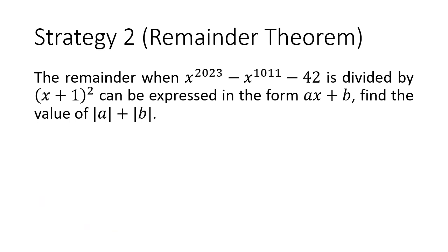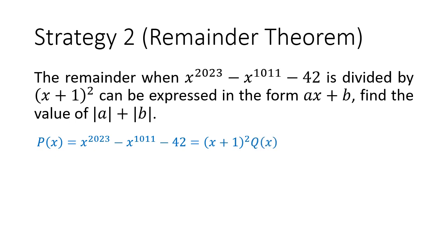We can express any polynomial in the form of dividend equals to divisor times some quotient polynomial qx plus the remainder r. By substituting x equals to a, we'll set the divisor x minus a to be 0, hence the remainder will be p of a. So, for this question, we can set the polynomial px to be the dividend. So, p of x is x to the power of 2023 minus x to the power of 1011 minus 42, and we're going to let this equal to the divisor x plus 1 squared multiplied by some unknown quotient qx plus the remainder ax plus b.